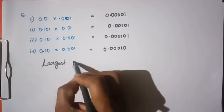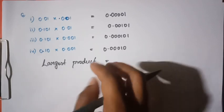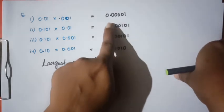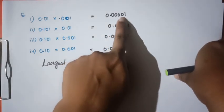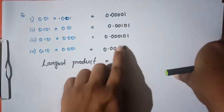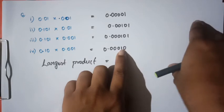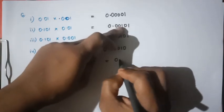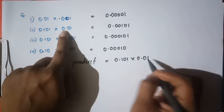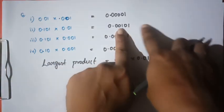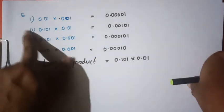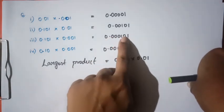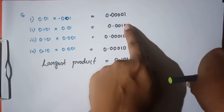We look at the largest product by examining the decimal parts. Where is the decimal part? We need to look at all the decimal parts carefully. What is the largest product? The decimal is the same, so the answer is the one where the decimal placement gives the largest value.